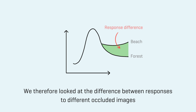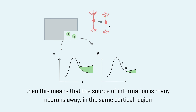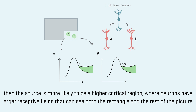We therefore looked at the difference between responses to different occluded images. If the difference emerges after a long time and is proportional to the distance to the border, then this means that the source of information is many neurons away in the same cortical region. But if the difference emerges after a short time and is independent from the distance to the border of the rectangle, then the source is more likely to be a higher cortical region, where neurons have larger receptive fields that can see both the rectangle and the rest of the picture.